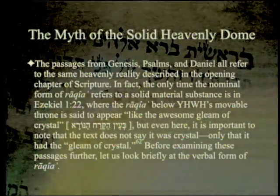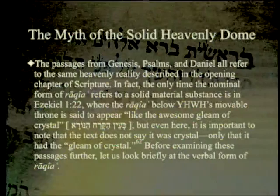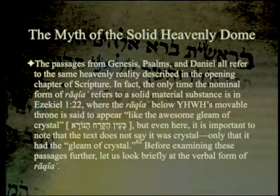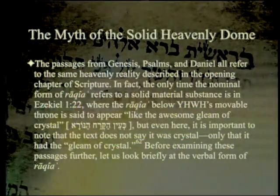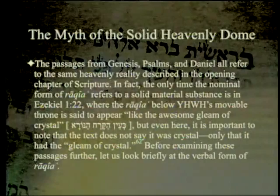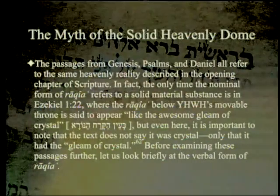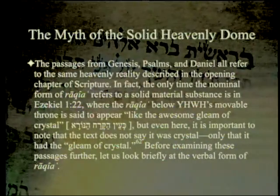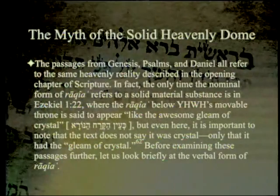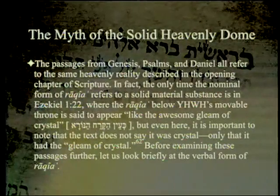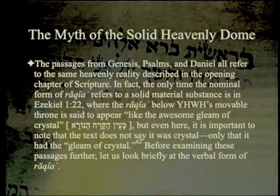The passages from Genesis, Psalms, and Daniel all refer to the same heavenly reality described in the opening chapter of Scripture. The only time the nominal form of Rakiah refers to a solid material substance is in Ezekiel 1:22, where the Rakiah below Yahweh's movable throne is said to appear like the awesome gleam of crystal. But even here the text does not say it was crystal, only that it had the gleam of crystal. As we looked at Rakiah in Ezekiel some years ago, it seems to be a clear substance, whatever else it is.